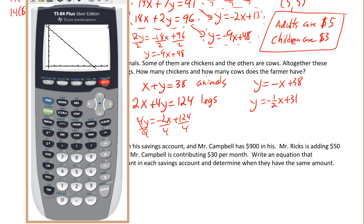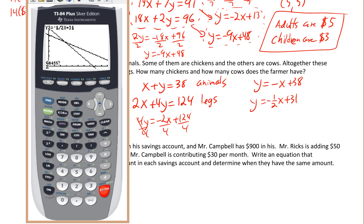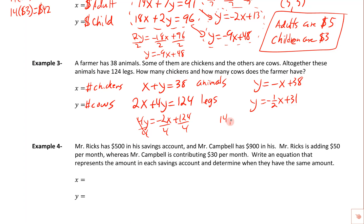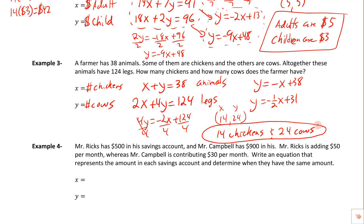Graphing shows both lines in the first quadrant, one crossing at 38 with slope -1 and the other crossing at 31 with slope -½, intersecting clearly on screen. Using 2nd > Calc > 5 (Intersect), the calculator finds the intersection at (14, 24). So x = 14 chickens and y = 24 cows.